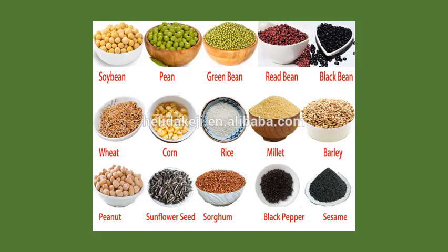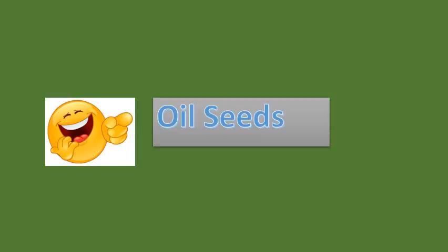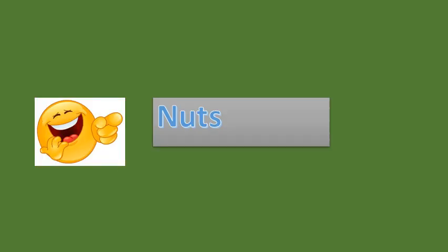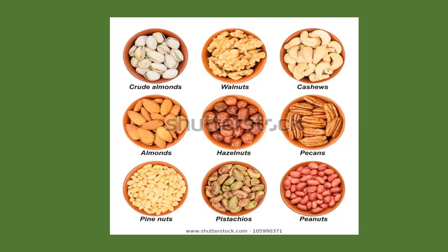First, you will be given options — you mark the correct one. Each question will have one answer. Next, look at oil seeds — go through all the oil seeds pictures carefully. Then look at nuts — identify the varieties of nuts correctly and mark the right answer.